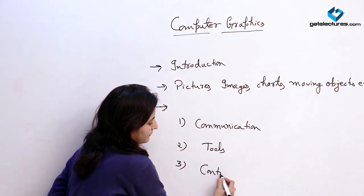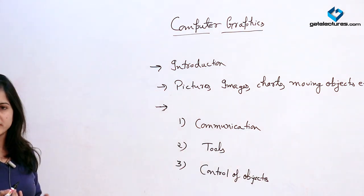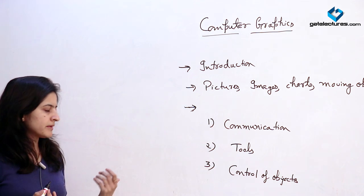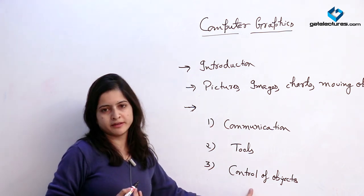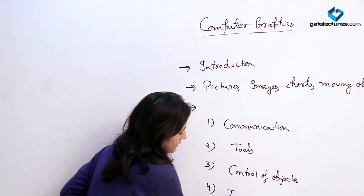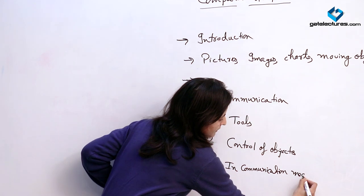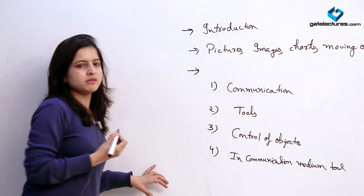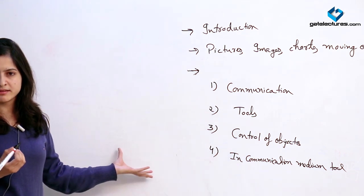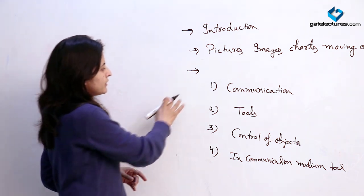The third interactive feature is control of objects. It deals with how the speed of the object or the motion of the object is controlled — how, when we are applying some animation, what is the speed of the object and how it is represented on the screen. All these control tools are provided by computer graphics. Another one is communication medium tools — it provides us the tools for how we are representing these objects on the screen with the help of CRT or other devices. These are the basic interactive tools which computer graphics provides us.